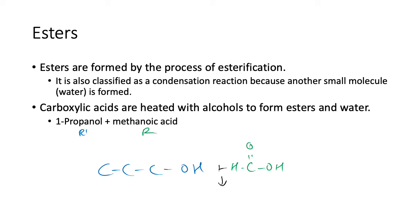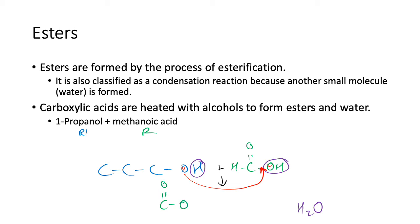Put these together — get rid of the OH, get rid of that H — they form water. Then this oxygen here sticks on the end there. It doesn't really matter which oxygen, the point is that an oxygen is there. So the carboxylic acid part is there and the alcohol part is there, making propyl methanoate.